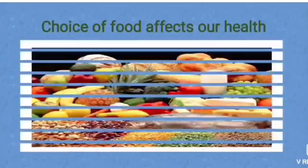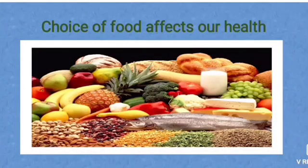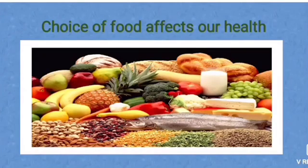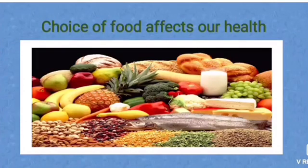But first, let's see how the choice of food affects our health. Children, if we are taking a proper diet — we are drinking milk, taking fruits, green vegetables — then we will be healthy. If we are healthy, we will grow healthy. Our height will be proper and our growth rate will be normal.